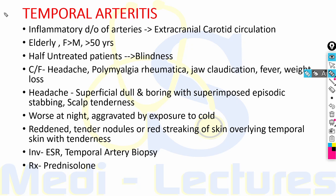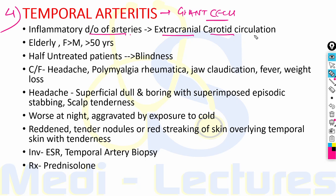Another important cause of secondary headache is temporal arteritis, also known as giant cell arteritis, as giant cells are seen in temporal artery biopsy. It is an inflammatory disorder of arteries involving extracranial carotid circulation. It is usually a disorder of the elderly, females most commonly affected, above 50 years of age. Half of untreated patients can develop blindness due to involvement of the ophthalmic artery. Treatment with glucocorticoids is very effective in preventing this complication, so prompt recognition is very important.